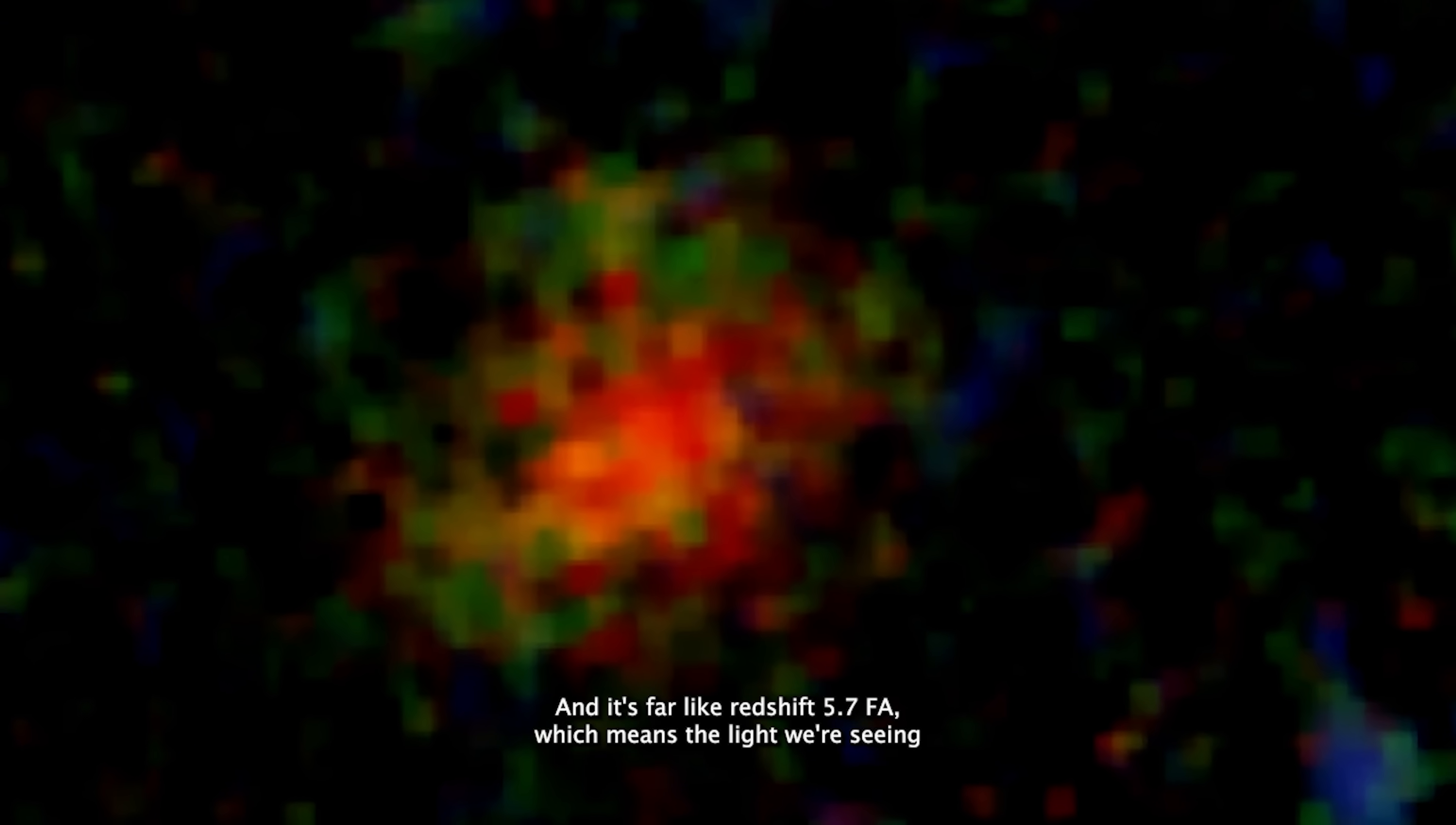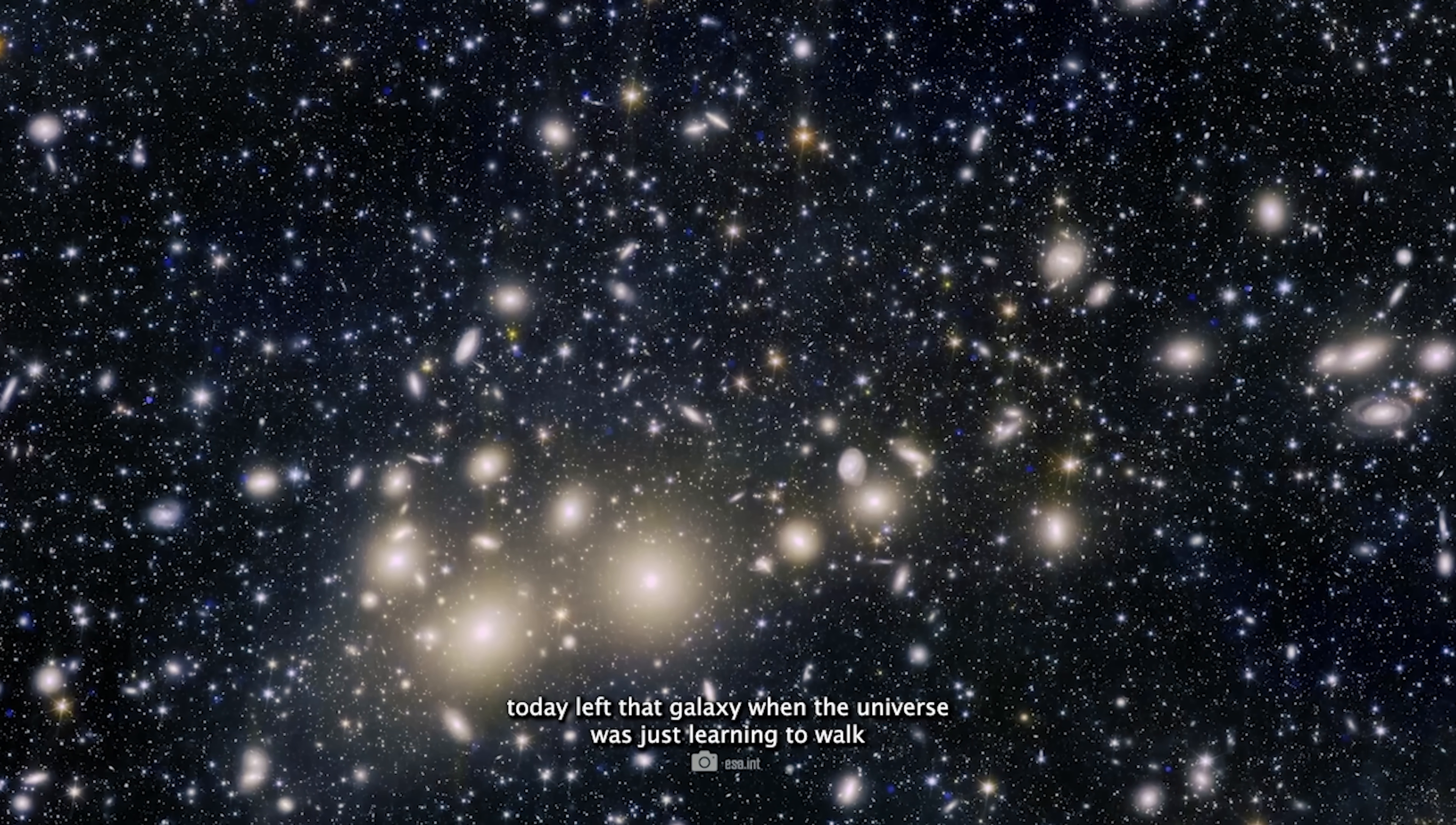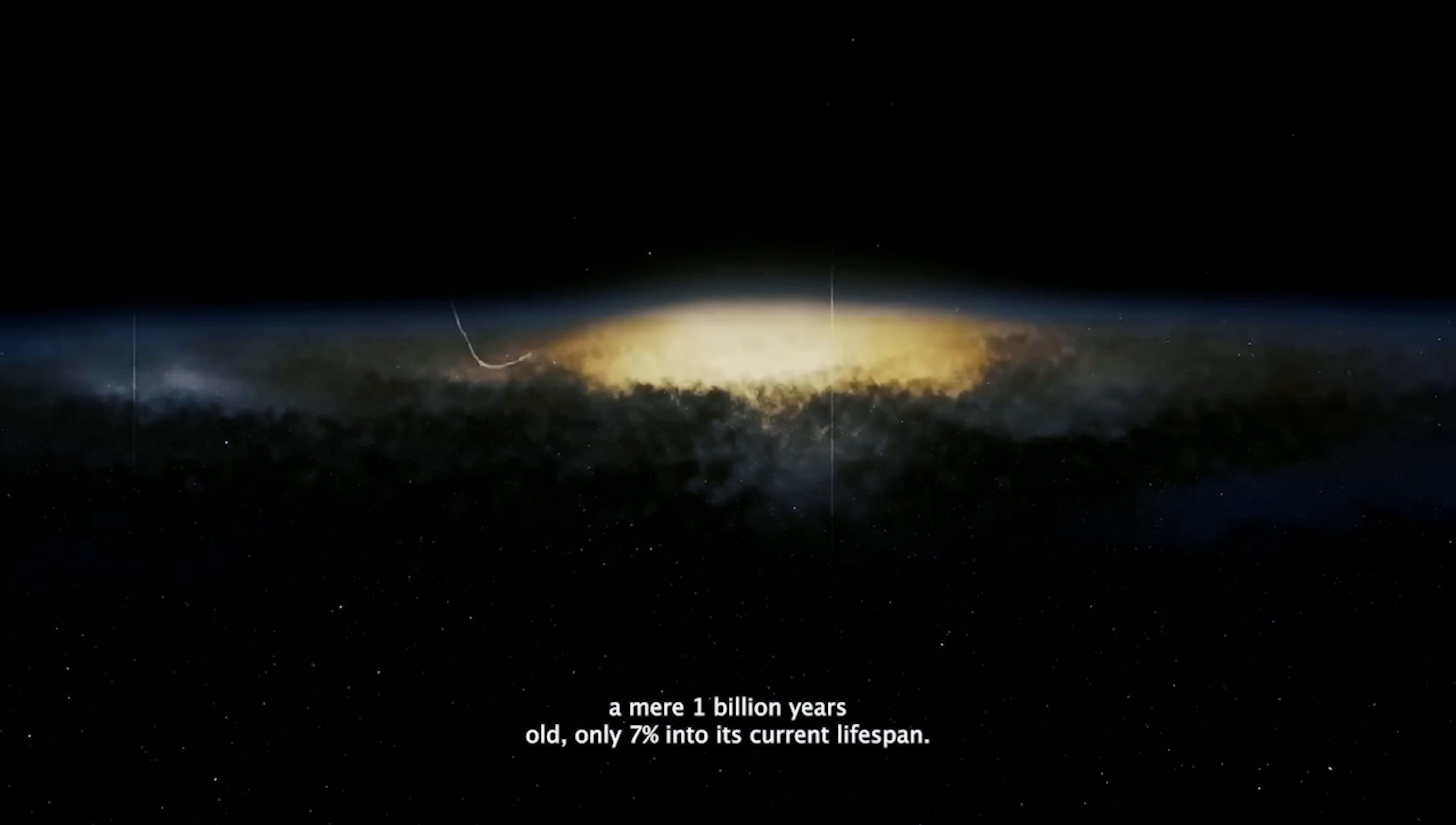And it's far, like redshift 5.7 far, which means the light we're seeing today left that galaxy when the universe was just learning to walk, a mere one billion years old, only 7% into its current lifespan.